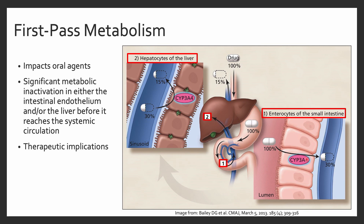Once the drug is in the enterocyte, CYP3A4 breaks it down — mostly into inactive components (70%), leaving only 30% in its active form. That 30% then enters the liver via the sinusoid, where it encounters CYP3A4 again in the hepatocyte, undergoing further metabolism. Only 15% of the drug product remains in its active form and goes on to systemic circulation. This product is therefore known to have high first-pass metabolism.